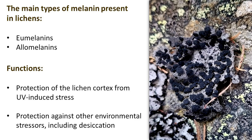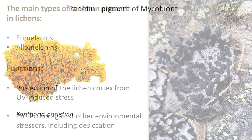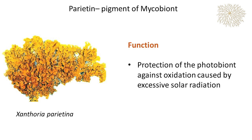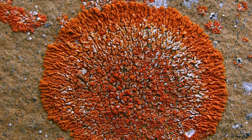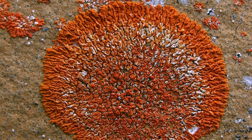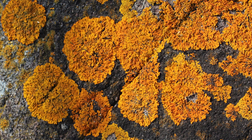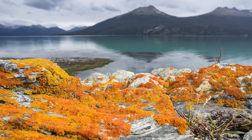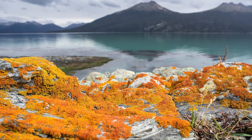Additionally, melanin provides protection against other environmental stressors, including desiccation. Parietin is a common orange-colored pigment initially discovered in the lichen Xanthoria parietina. This pigment is synthesized by the mycobiont and protects the photobiont against oxidation caused by excessive solar radiation. It has also been shown to specifically protect lichens against UV-B light at high altitudes in alpine regions. UV-B light stimulates the production of parietin, which in turn protects the lichens from damage.